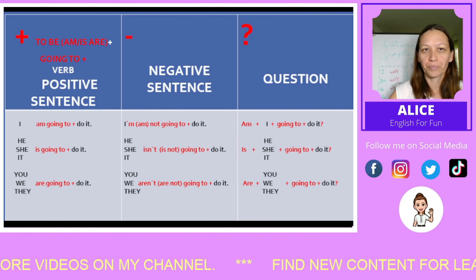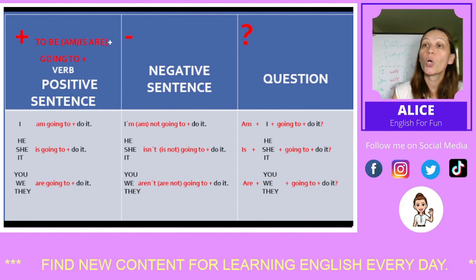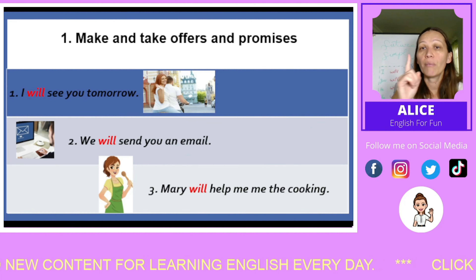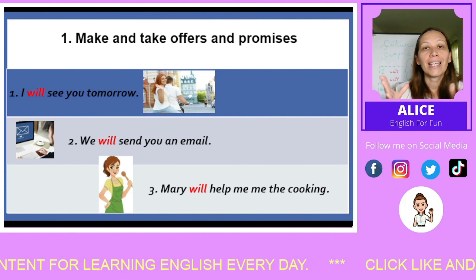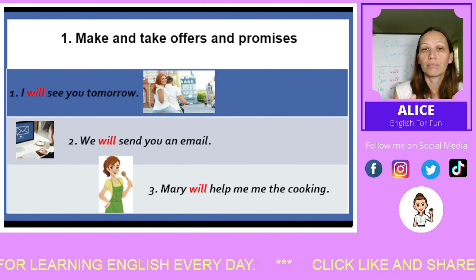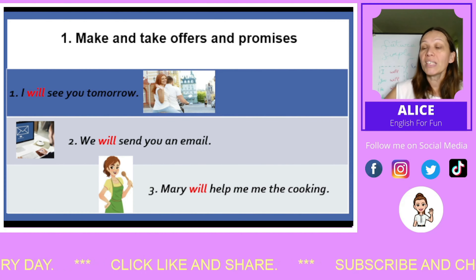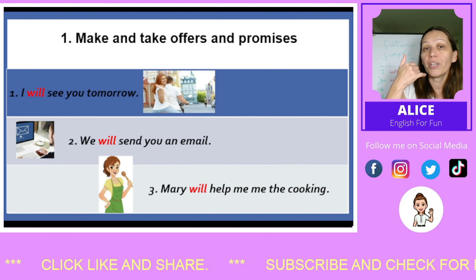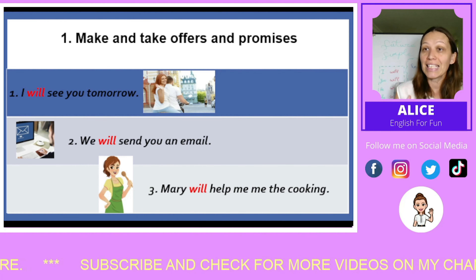Excellent. Let's move on. Now let's have a look at some examples to see when we should use 'will' and when we should use 'to be going to'. Number one: when we talk about making or taking offers or promises, we should use 'will'. For example, 'I will see you tomorrow', or 'We will send you an email' — someone made an order and you're confirming it, so you're promising to send an email.